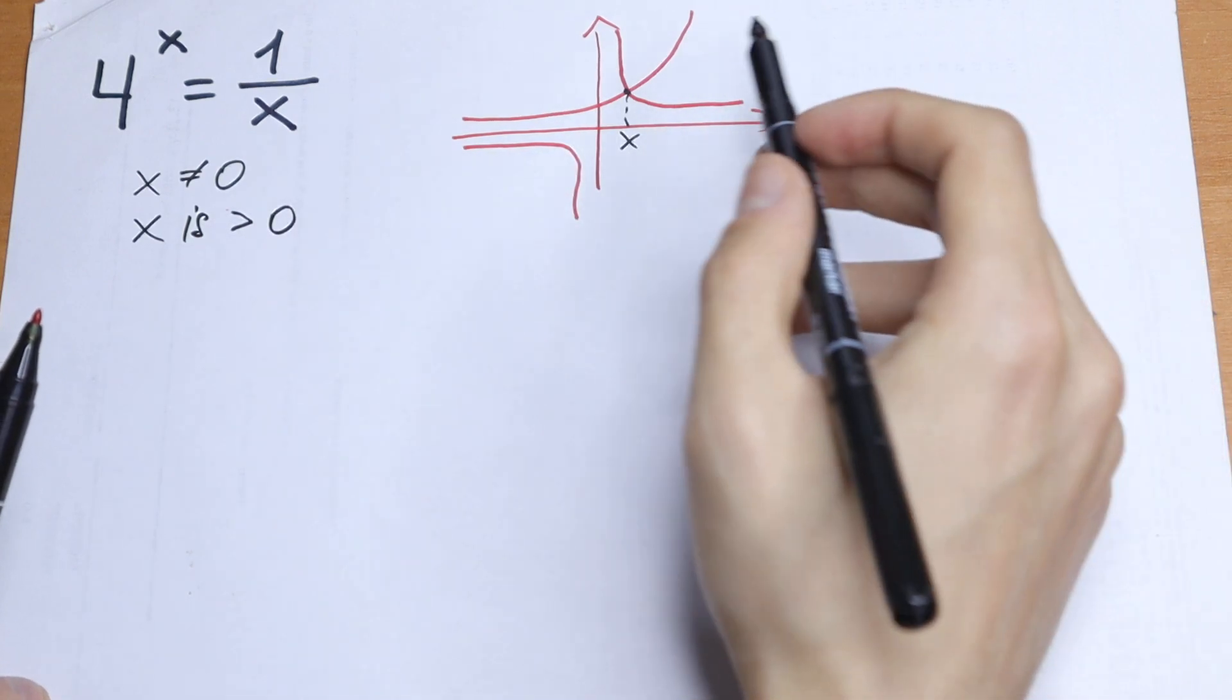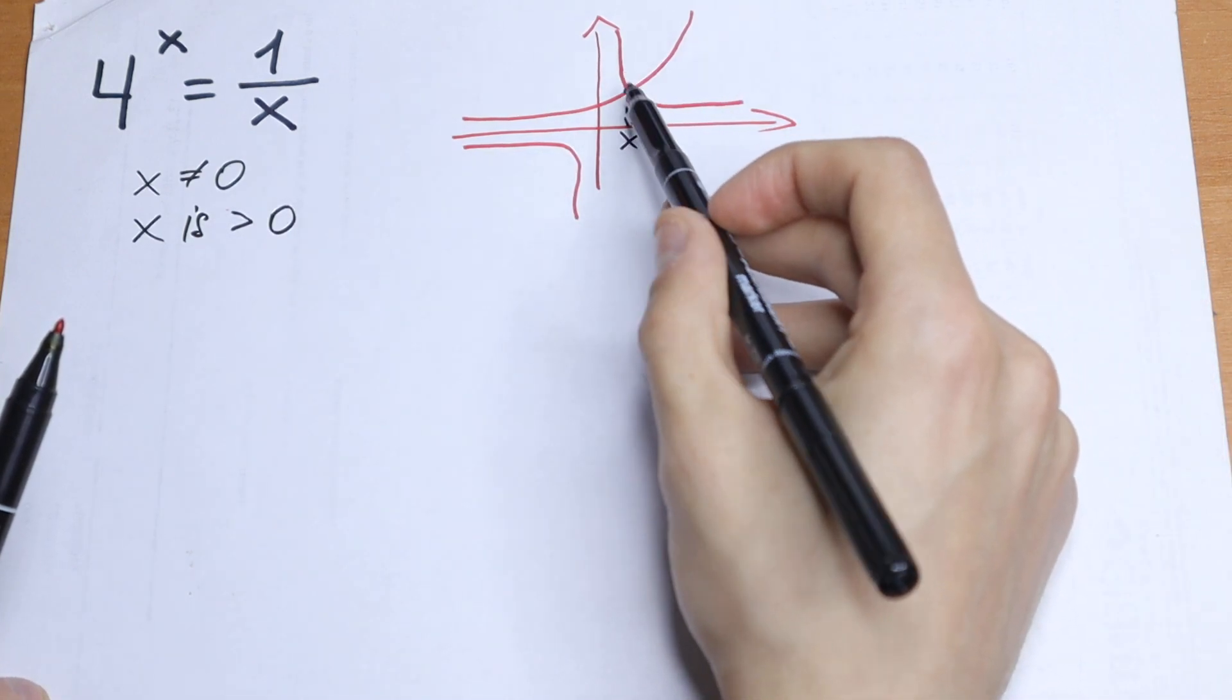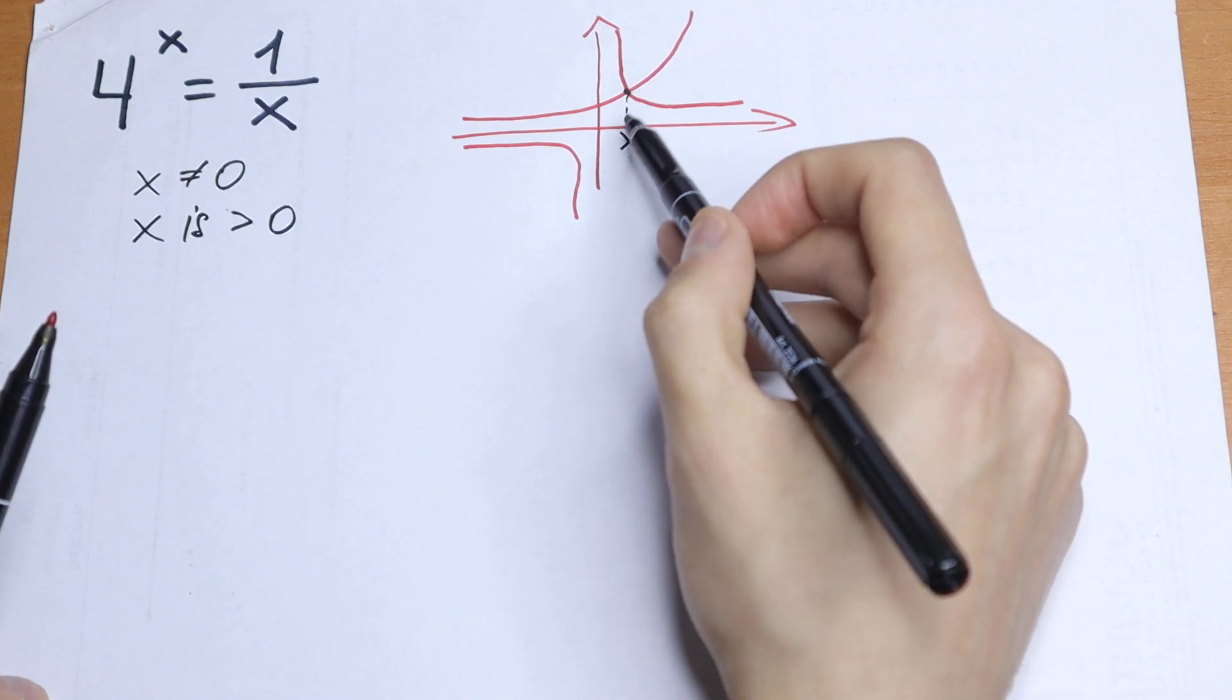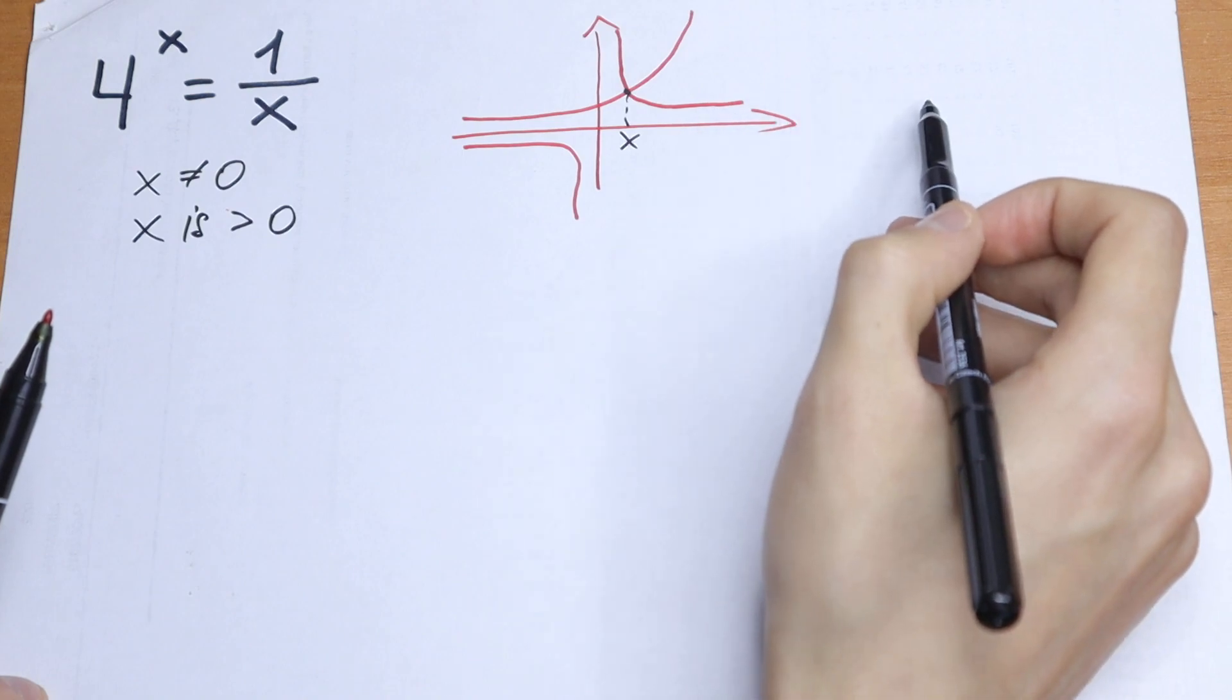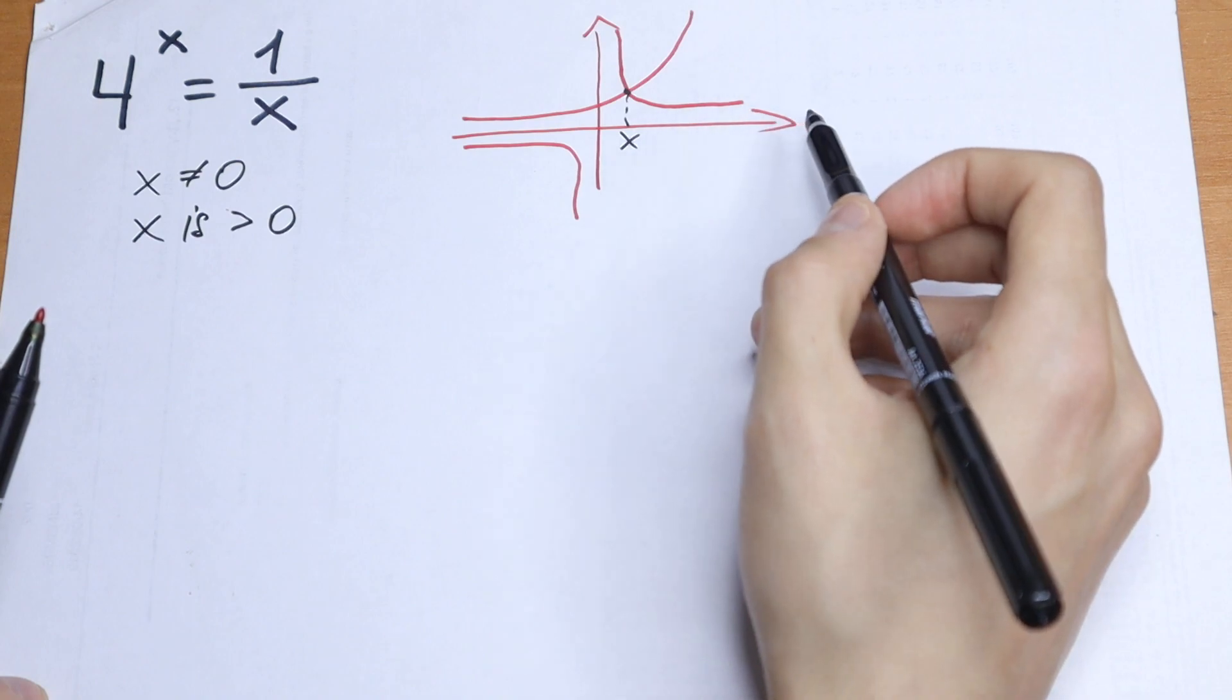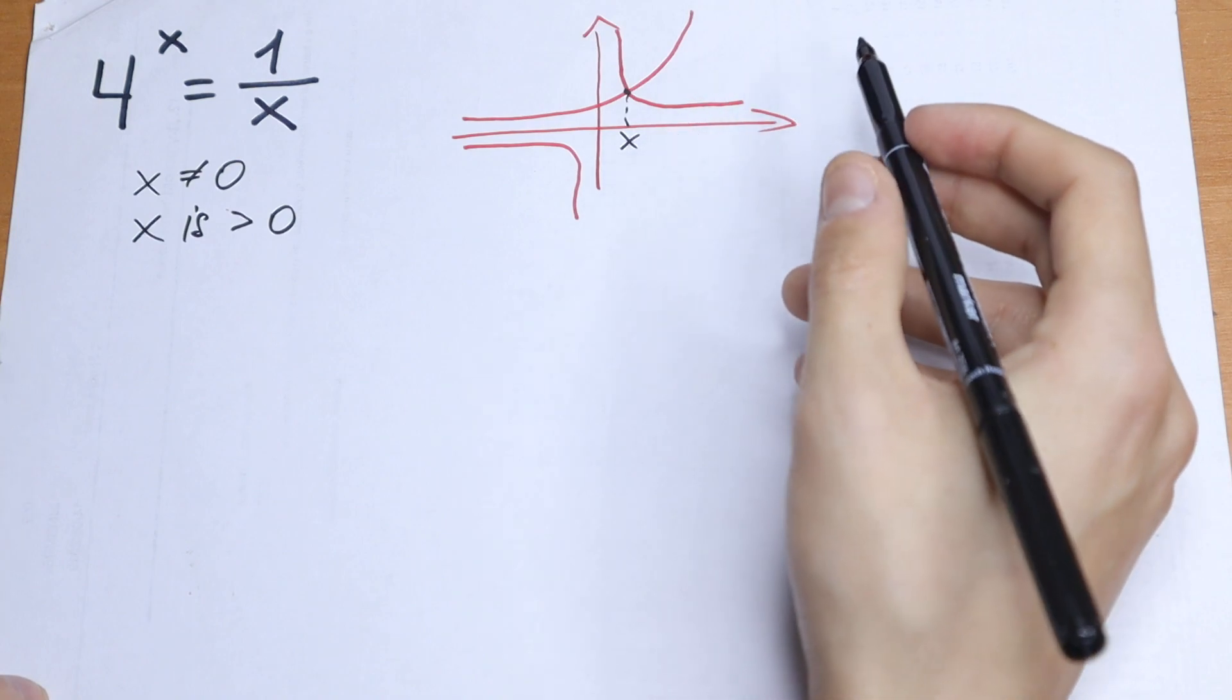So what are we going to do next? Of course we can see that right here our branches intersect at a small value of x. So it's not like 100, it's right here in the beginning. So we need to check x is greater than 1 and x is less than 1.